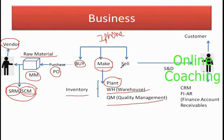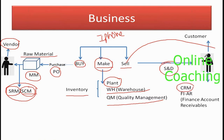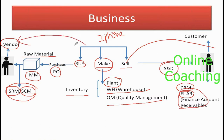Once you're done manufacturing your product, you need to start selling. To sell to customers, that is Sales and Distribution — SD comes into the picture. With many customers, you need to manage customer data — that is Customer Relationship Management, CRM. When the customer pays money, you manage your financial information with FICO. Receiving money from customers is Finance Accounts Receivable (FI-AR); paying money to vendors is Accounts Payable (FI-AP). This is how each SAP module fits into a business.